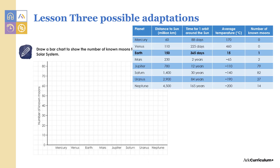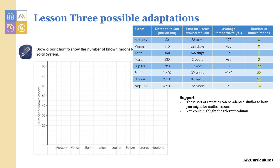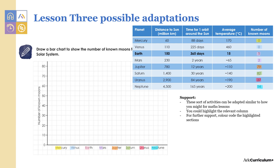Lesson three uses the same table as in lesson two. Pupils need to draw a bar chart to show the number of moons each planet has. You could support pupils by adapting the bar chart in ways that perhaps you have previously done in maths lessons. You could again highlight the relevant column and even colour code the highlighted data and planets, or you could partially complete the activity as a model.